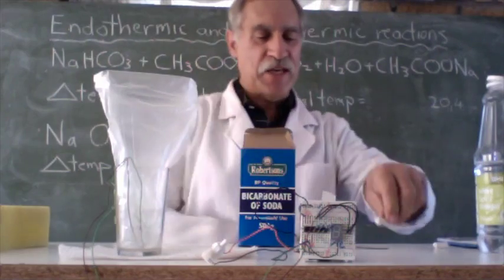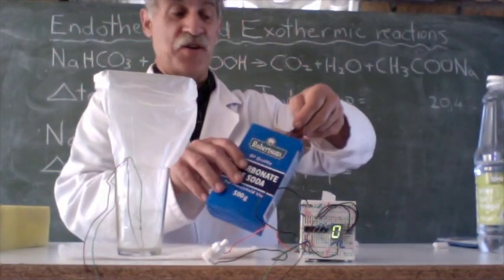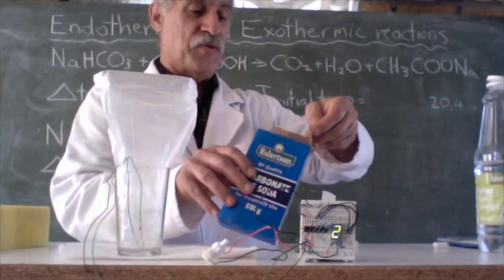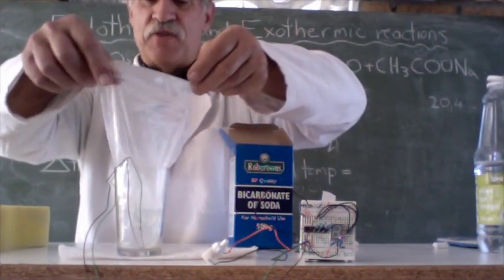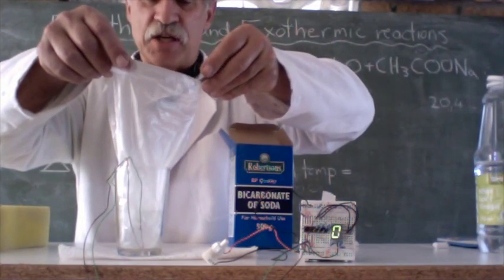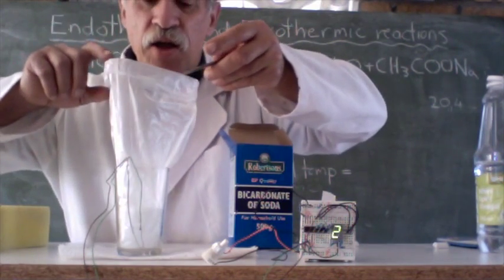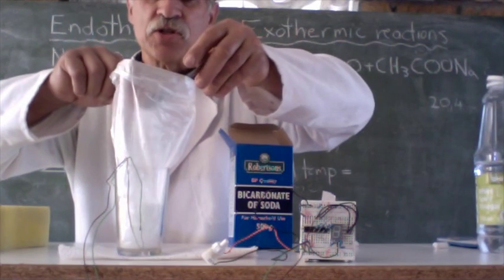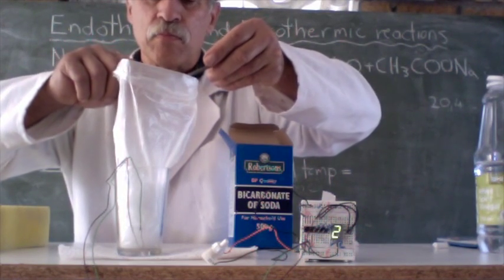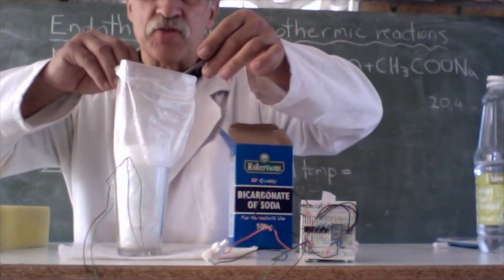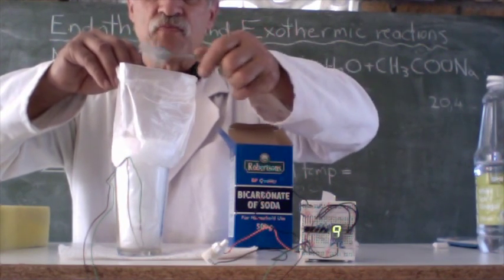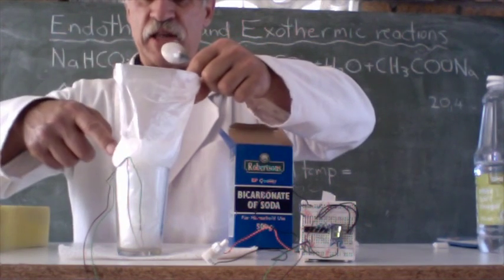Now we're going to carefully add some bicarb and see if the temperature decreases or increases. So it's going to foam. Let's throw in just a little bit of bicarb at first. So it foams up. You can see it's foaming right into the bag.